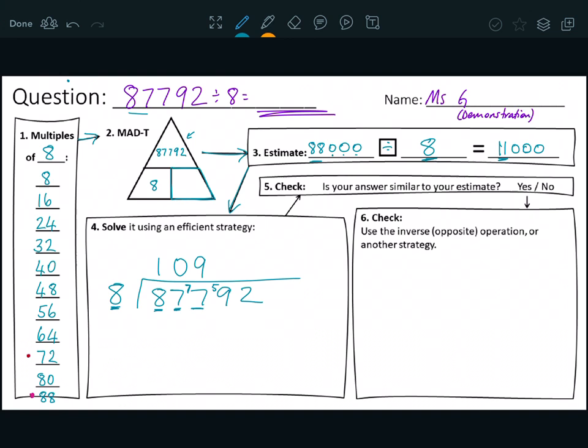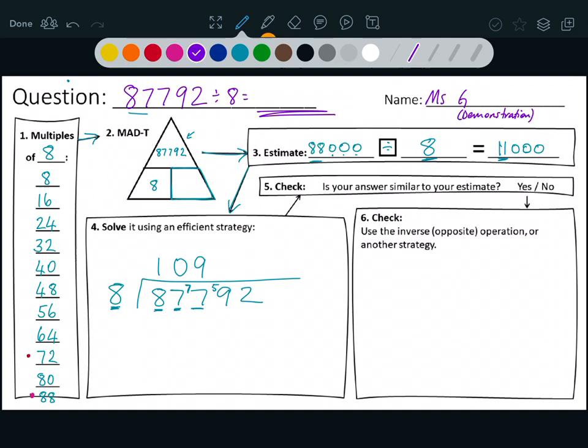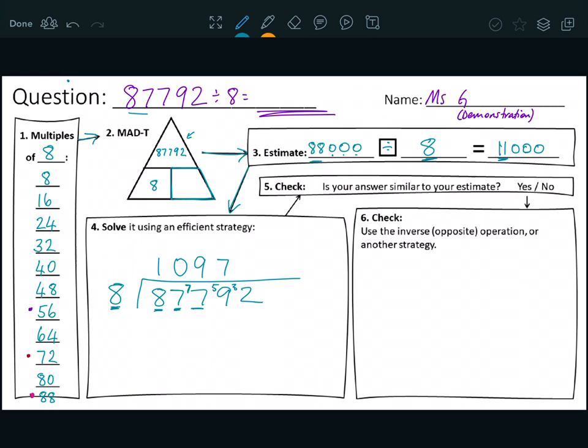So now I'm looking at 59. So 59 divided by eight. What's a friendly number here? 56 is close, but not higher than 59. So eight times seven is 56, plus three more makes 59.